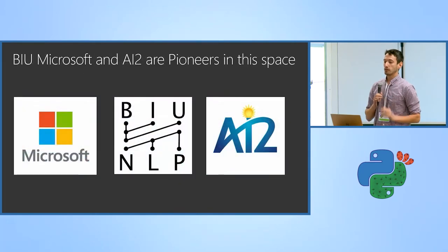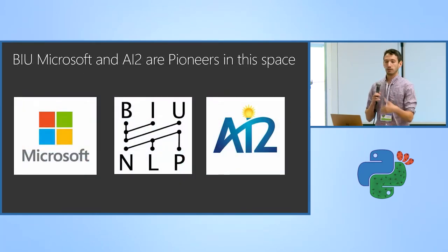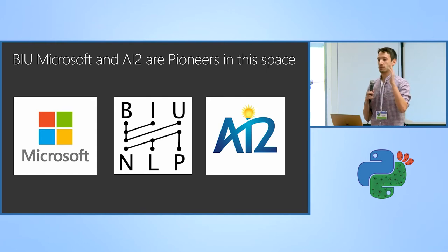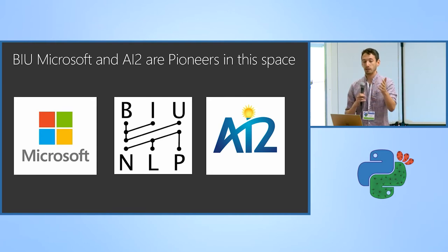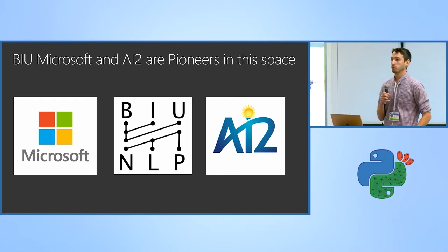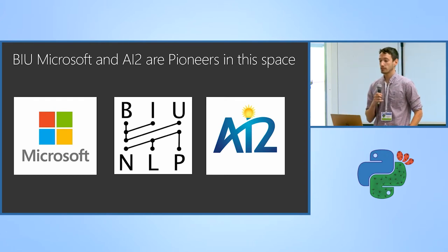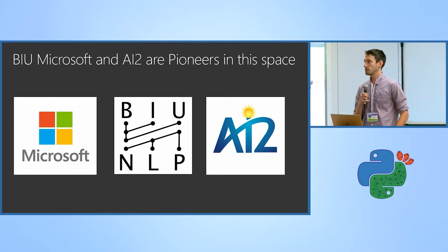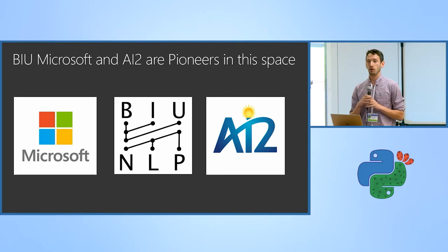A good example is the work around legal document classification — extracting information from legal documents as opposed to paying a lawyer $400 an hour to do that. The last area seeing a lot of interest is ambient computing: using NLP to better parse and understand how we interact with our environments and with sensors and smart connected devices. Organizations from Google to Microsoft to BIU NLP and AI2 are really pioneers in this space.